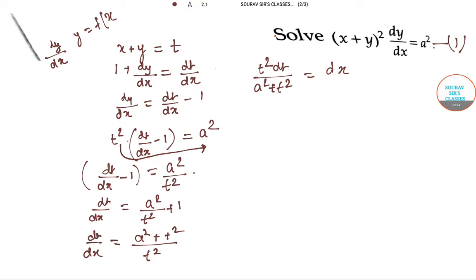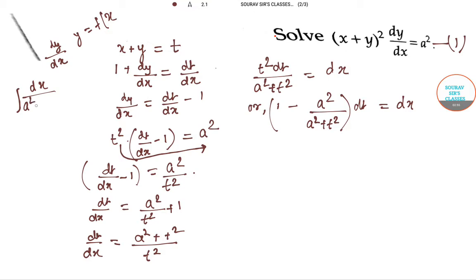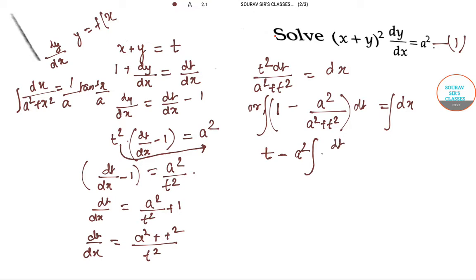This can further be written as (1 − a²/(a² + t²)) dt = dx. Now we are going to integrate both sides. We should recall that the integration of dx/(a² + x²) = (1/a) tan⁻¹(x/a). So integrating: 1·dt minus a² times dt/(a² + t²) equals dx.